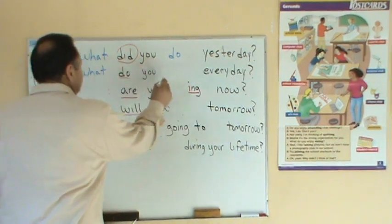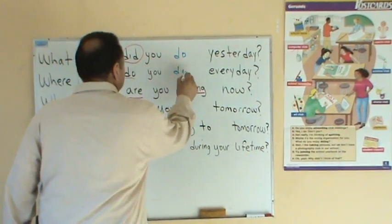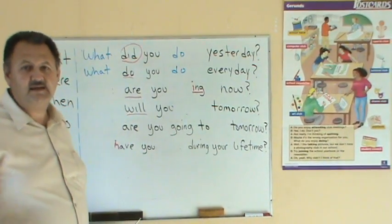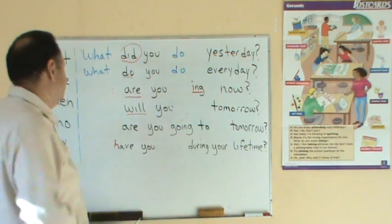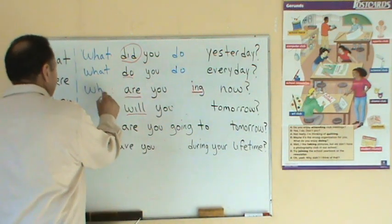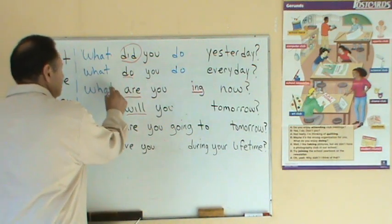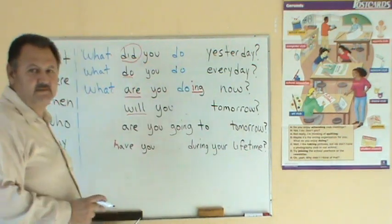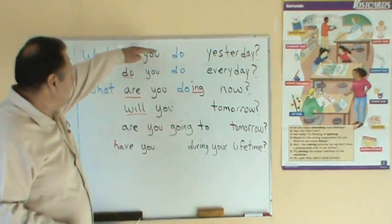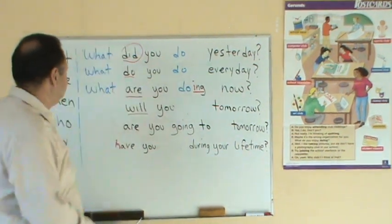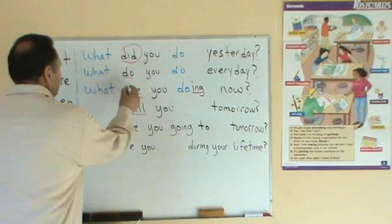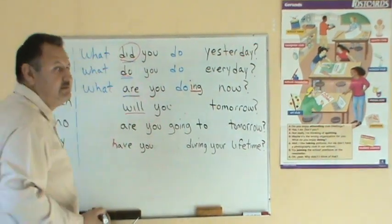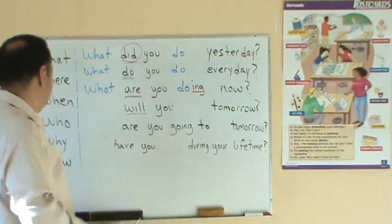What do you do every day? — ¿Qué haces al diario? ¿Qué haces? What are you doing now? — ¿Qué estás haciendo ahora? Do you see how the tenses are changing and how the auxiliaries are changing? ¿Sí? ¿Ok?